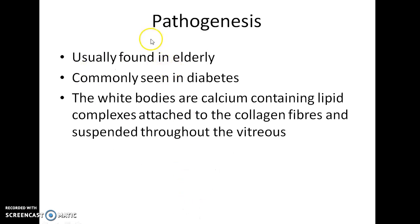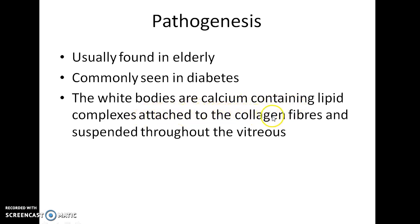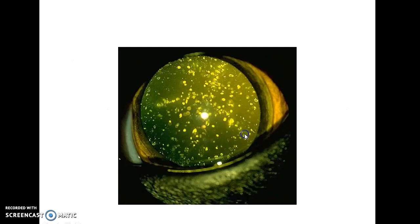What is the pathogenesis of this condition? Asteroid Hyalosis is usually found in elderly patients. It is commonly seen in diabetes mellitus patients. The white bodies are nothing but calcium-containing lipid complexes attached to the collagen fibers and suspended throughout the vitreous.